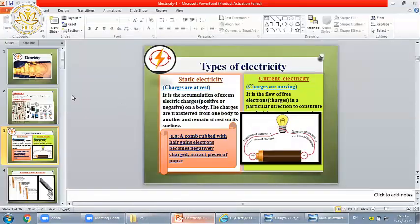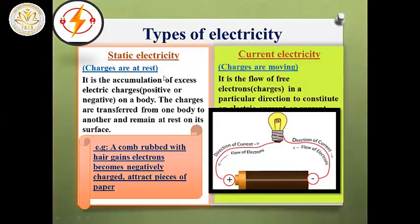Electricity is very important to study. We have two types: static electricity and current electricity. Static electricity is when the charges are at rest — the accumulation of excess electric charges, positive or negative, on a body. The charges can transfer from one object to another.